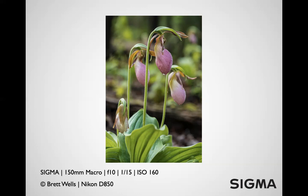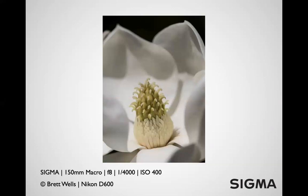I experimented a lot with aperture on the lady slippers — I wanted the front flower really sharp, the front group recognizable but soft, and the background just soft enough that you could tell there were other flowers there. Then a magnolia shot from a garden — I think every macro photographer has to have a magnolia in their portfolio. The first time I was in Phoenix I spotted hummingbirds from a hotel window — a good reminder to pay attention to what's around you wherever you travel.